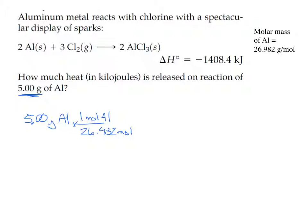The question is asking how much heat is released on the reaction of five grams of aluminum. I'm going to treat this enthalpy almost like a product of the reaction because it's being released as the reaction proceeds. I'll use the mole ratio: every time two moles of aluminum reacts, negative 1408.4 kilojoules of heat are released. The conversion factor will have two moles of aluminum on the bottom.